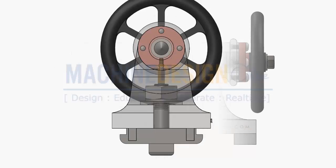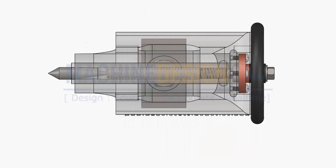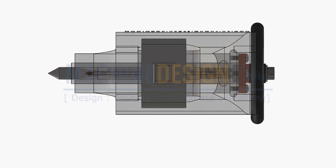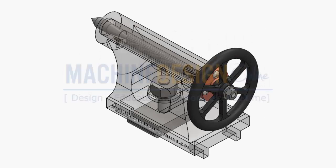A tailstock, also known as a foot stock, is a device often used as part of an engineering lathe, wood turning lathe, or used in conjunction with a rotary table on a milling machine.